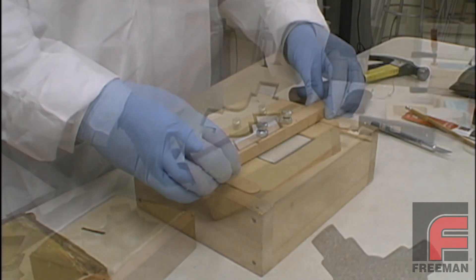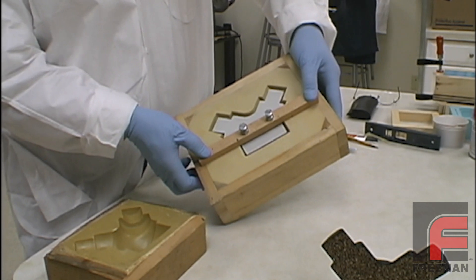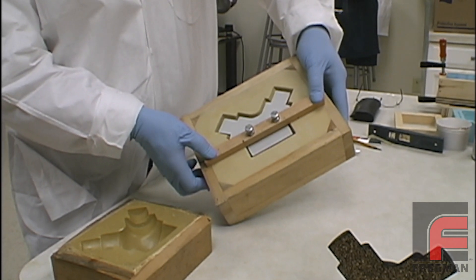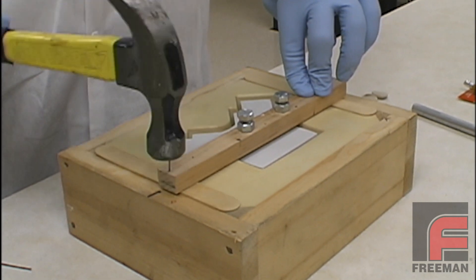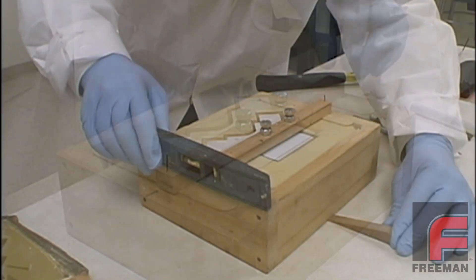Once the core is in position, we have a uniform one-eighth inch gap between the plug and the mold, so we secure the suspension bar to the mold for stability. After making sure the mold is level, we are ready to pour.